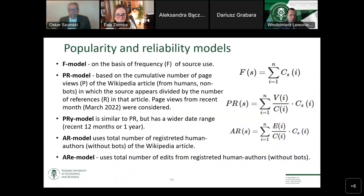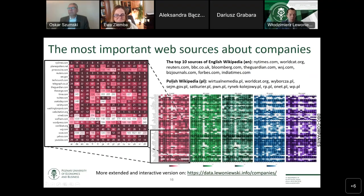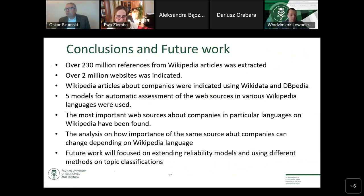In previous work we presented models that can assess the reliability and importance of sources. In this work we use some of them and propose a new one. Depending on the model, we can achieve different results. For example, in Polish Wikipedia one of the most important sources of information about companies is Virtual Media, and so on. We have done this for all considered language versions — over 40 languages.